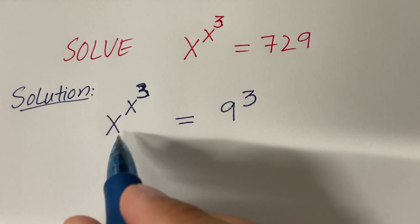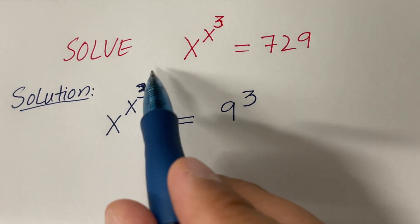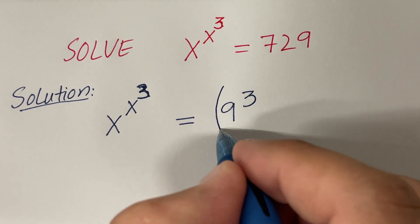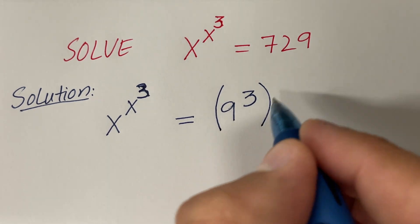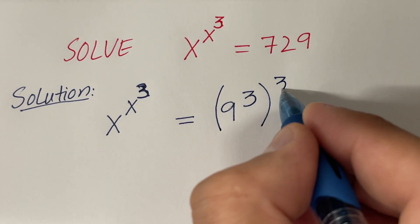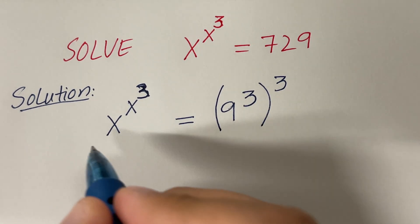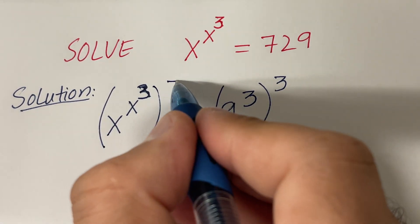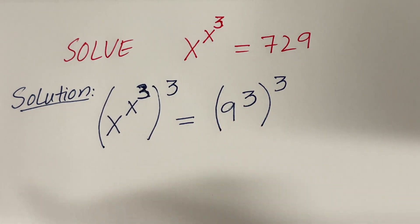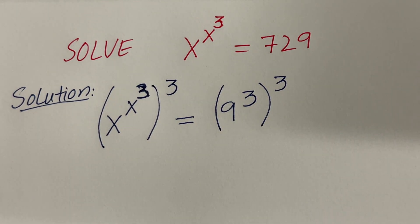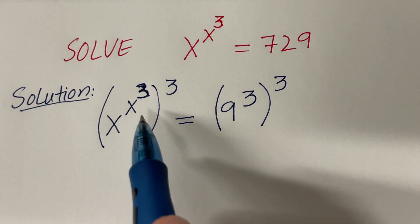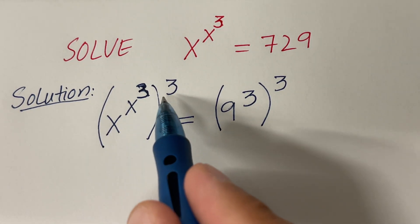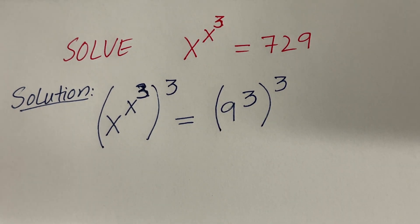Now the trick here is to take another cube on both sides, because we have a 3 here. That's why we have to take another cube here — this is the trick. You will see in a moment the advantage of taking the cube on both sides.